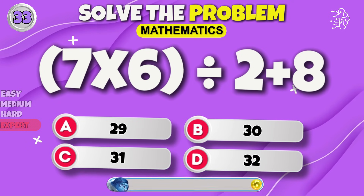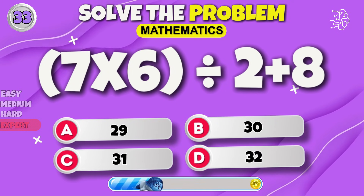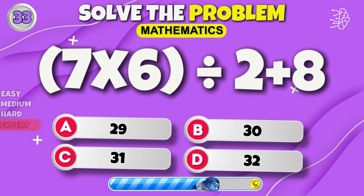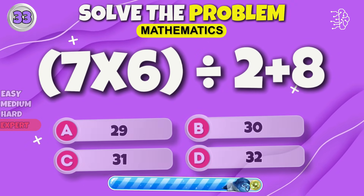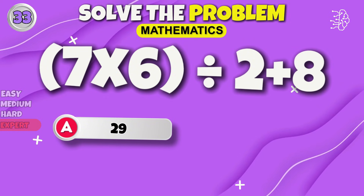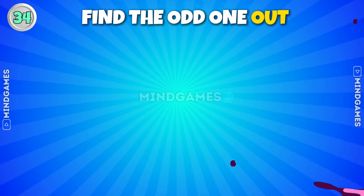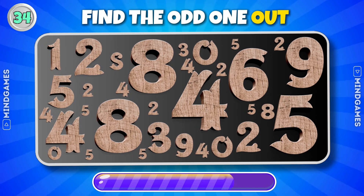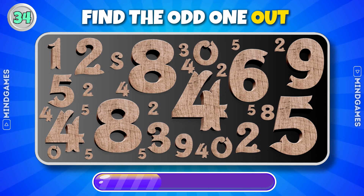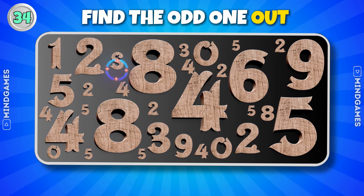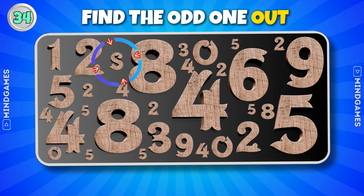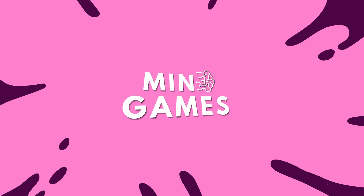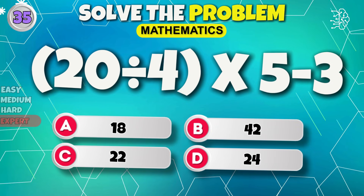Keep going. 29. Find the odd one out. There you go. Next round.